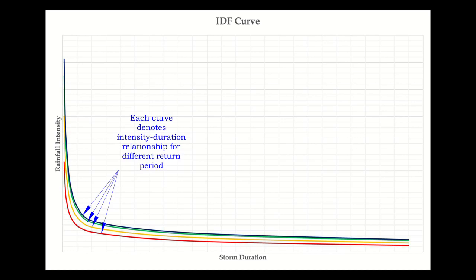In this video, we will demonstrate the steps to develop the IDF curve under different return periods based on the point rainfall data from only one station.